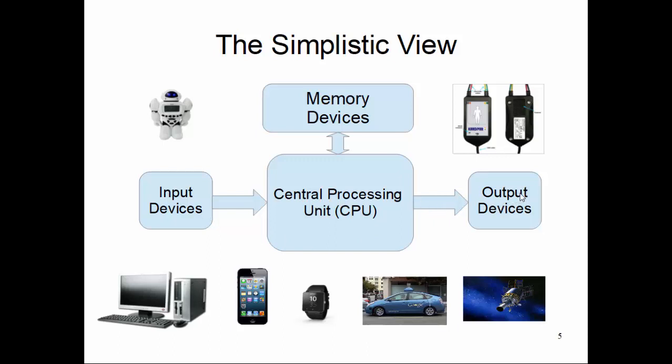This computing system also has an output device associated with it. For example, a desktop monitor is one of the most commonly used output devices — you see all your program results, gaming, movies, and other content on screen. For a Google car, the output is mainly controlling the car: steering wheel adjustments for the lane, applying acceleration at the right time, putting on the brake at the right time — these are all kinds of output devices.